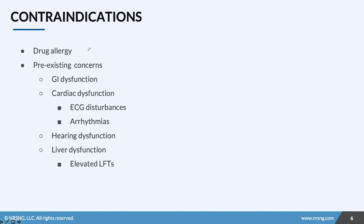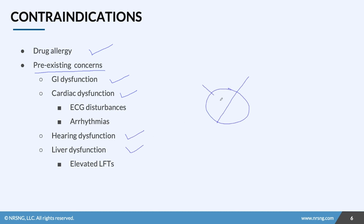Macrolides' contraindications include obviously any sort of allergies your patient might have. But with these antibiotics you must also assess your patient for any pre-existing conditions. If your patient has GI dysfunction, cardiac dysfunction, hearing impairment or dysfunction, or liver disease, this antibiotic is not going to be ideal for them because it might potentially exacerbate their condition.